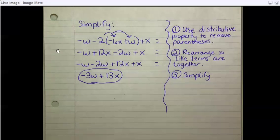Here are my notes. Simplify negative w minus 2 times parentheses negative 6x plus w end parentheses plus x. So first I needed to use the distributive property to remove these parentheses. So negative 2 times negative 6 is positive 12x, and negative 2 times this w, which is like 1w, so negative 2 times positive 1 is negative 2, so this is negative 2w. And then this negative w and plus x just stay the same.